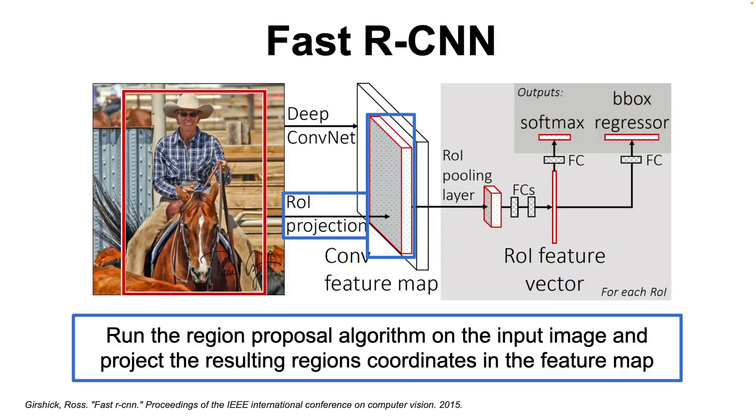Then, we run the region proposal algorithm on the input image and translate the coordinates of each proposed region into the equivalent coordinates within the feature map. If you want to know more about the region proposal algorithm and how it works, check the previous video in the series about the R-CNN where I go into more details regarding this subject.